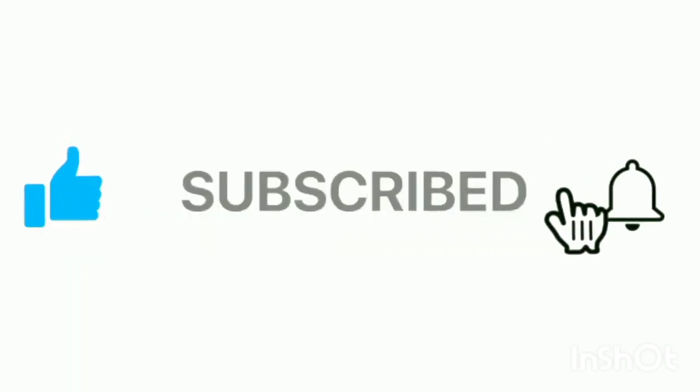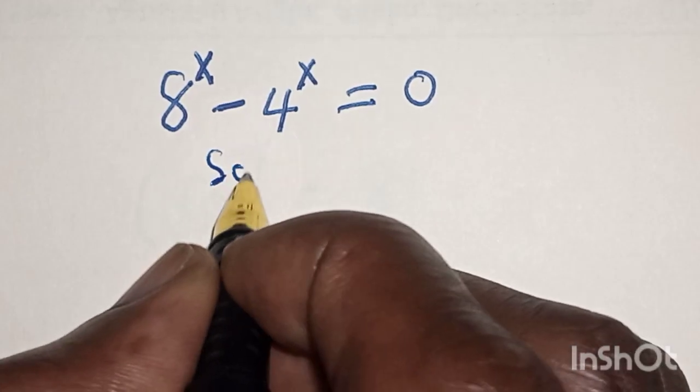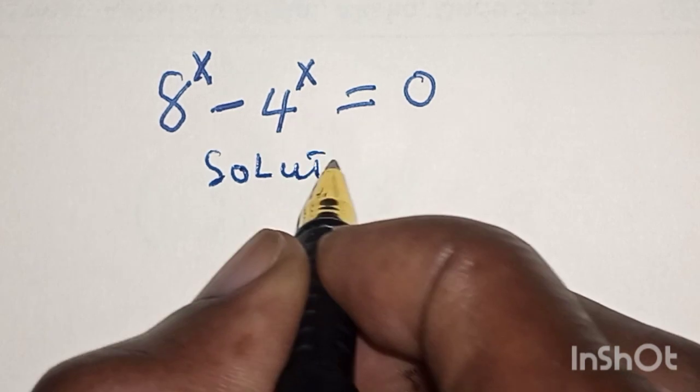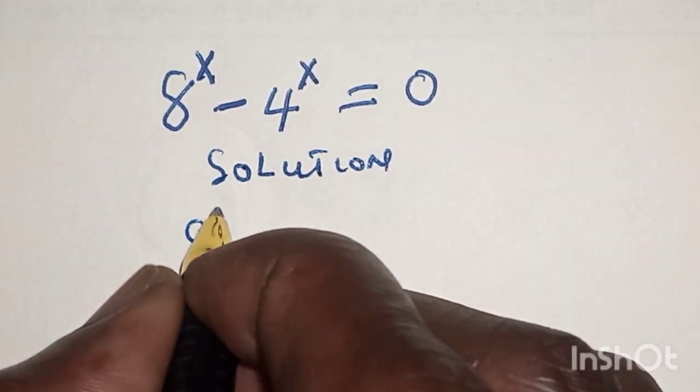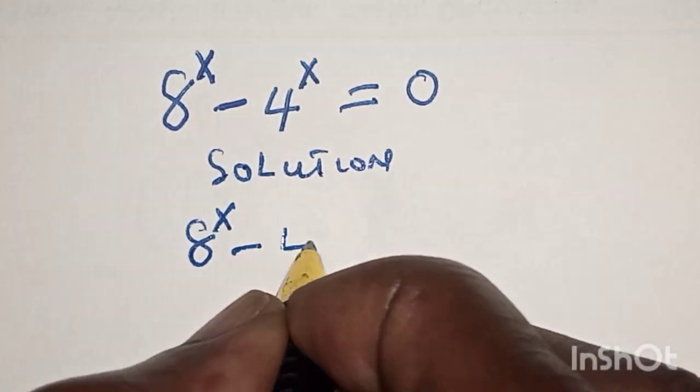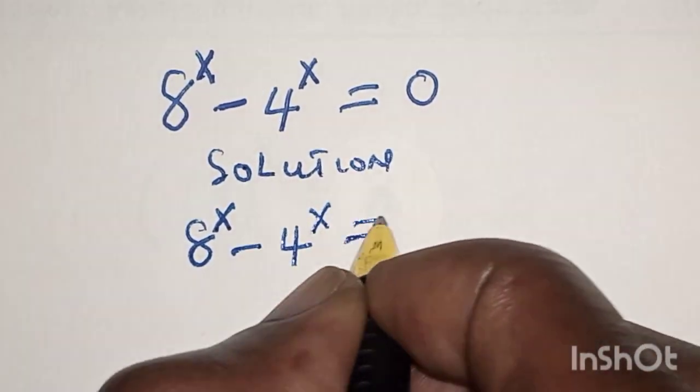Like, share, comment and subscribe. Solution: The given equation is 8 raised to power x minus 4 raised to power x is equal to 0.